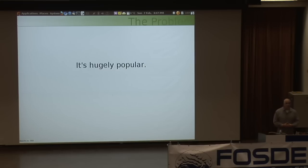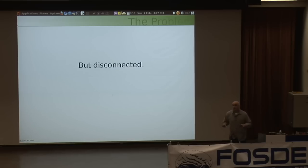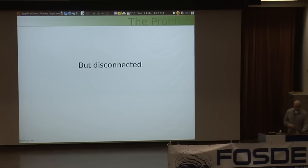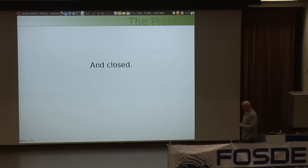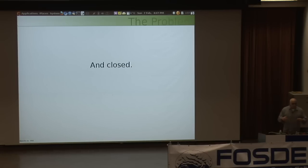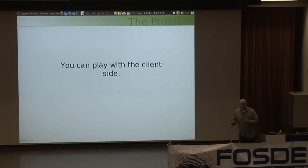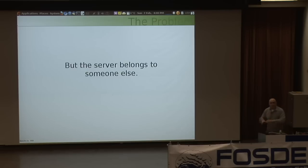Everyone who knows about Facebook knows that status updates are a central part of their system. But these status updates are, for the most part, completely disconnected. Status updates from different parts of the web don't come together, and this mesh of sociality is not completely connected. These systems are, by and large, closed. It's fascinating to see how many large websites use open source software to build very large proprietary systems. For the most part, very big websites keep their code to themselves. You can play with the client side, you can have an API or some data feed, but the server side belongs to someone else. You can't control the rules of how the server works.